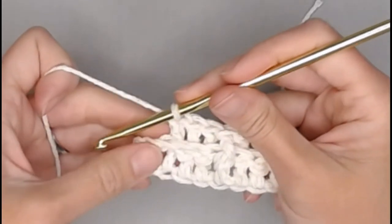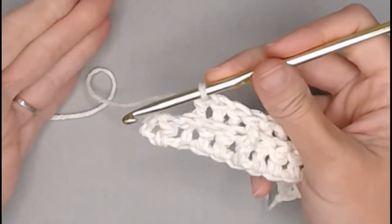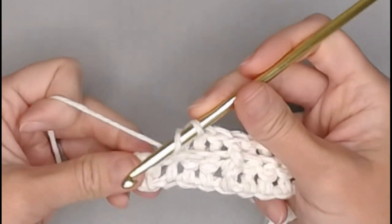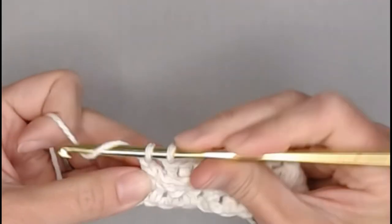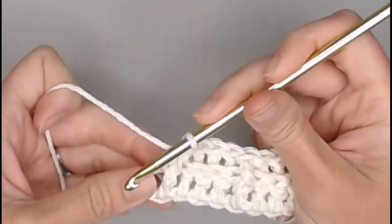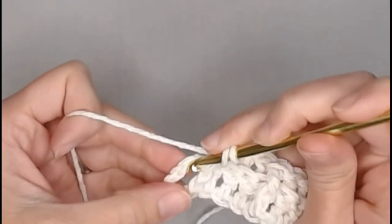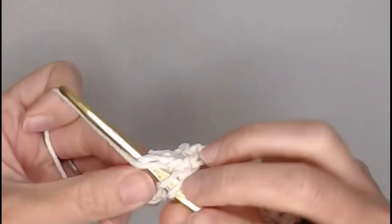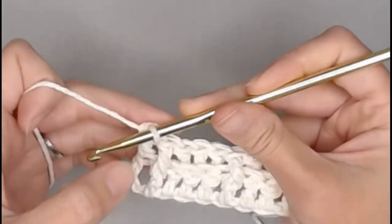Once you reach the very end of row two, you will notice two stitches remaining. You will front post over the first double crochet stitch. And in the next stitch, you will make a regular double crochet. So in that third chain, regular double crochet.